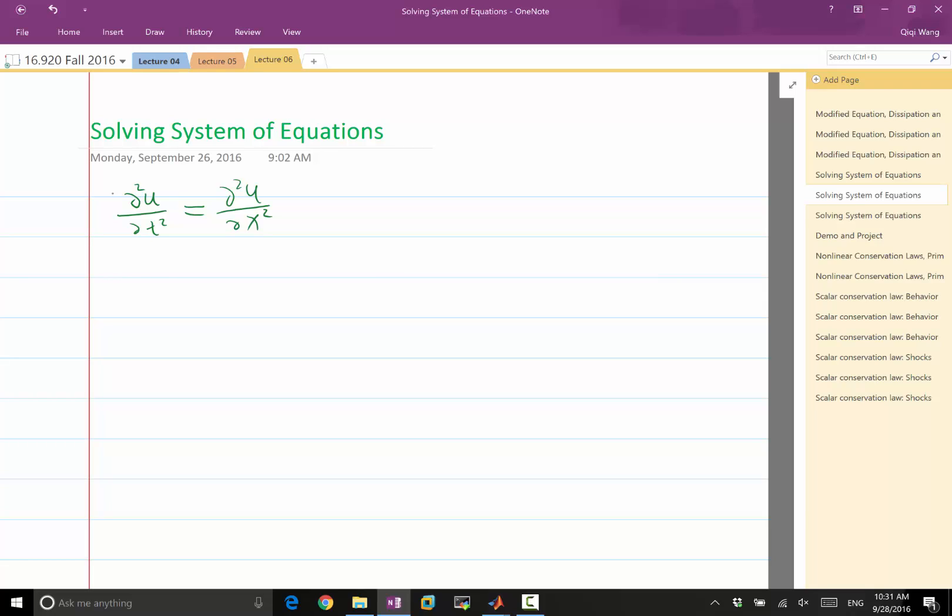It means the function u is going to diffuse out after time. But if we have a second-order derivative in time, the equation behaves completely differently.